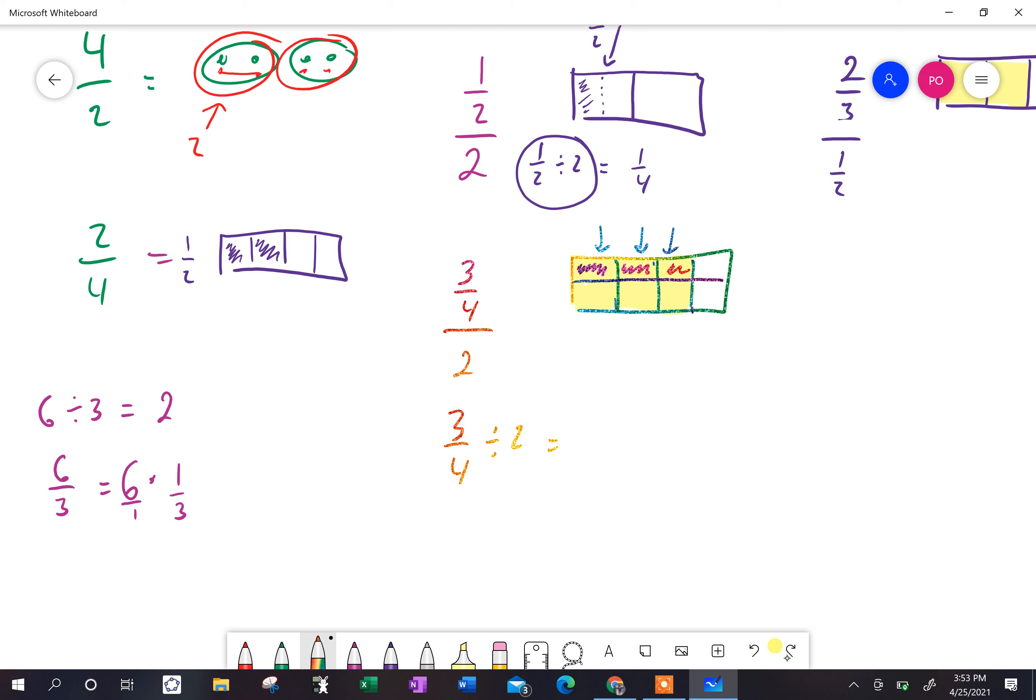And so now I get three quarters divided by two. And it looks like the answer is three over eight. Well, once again, we'll take a look at this in one moment.